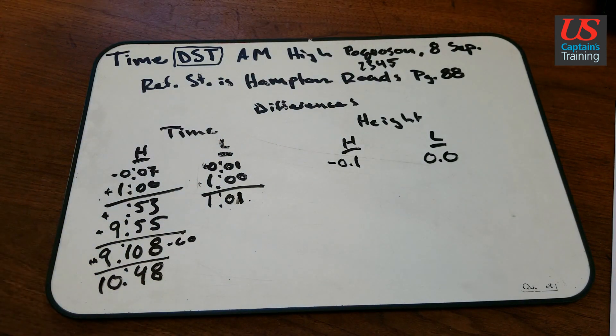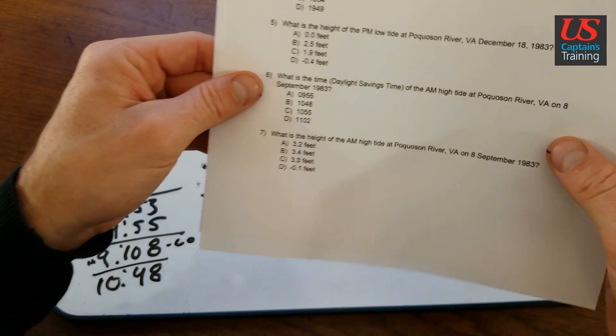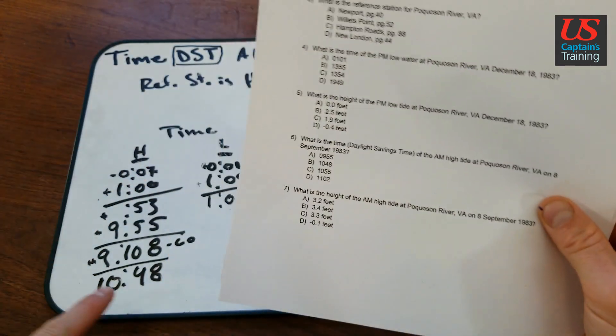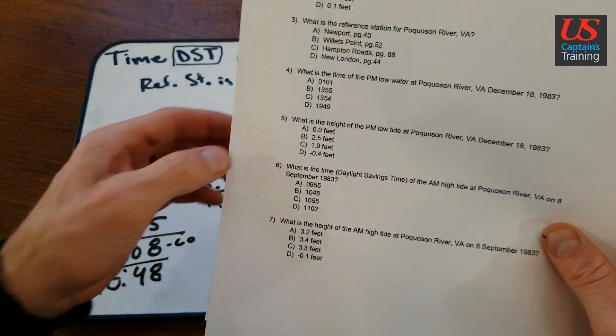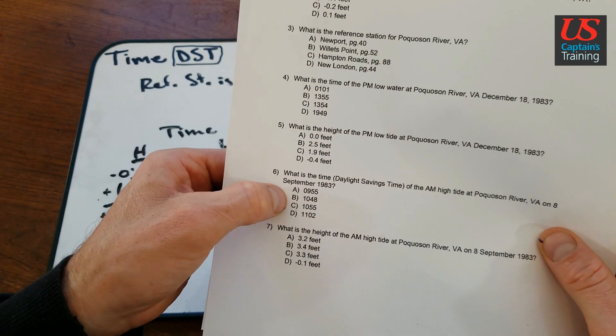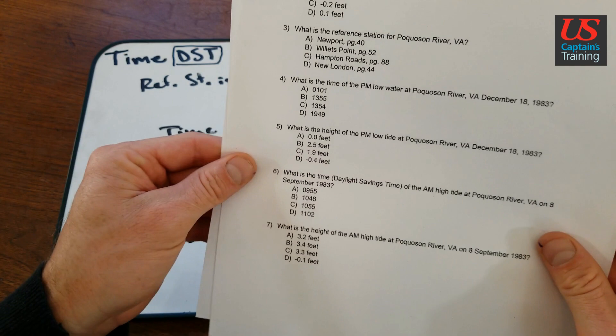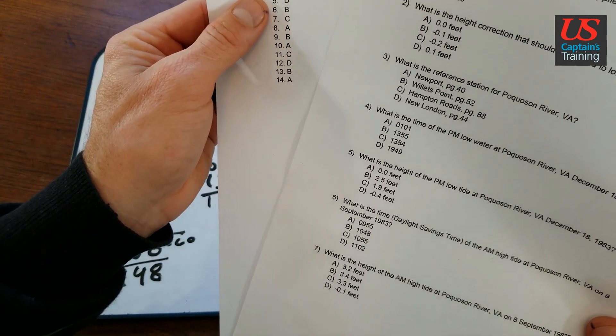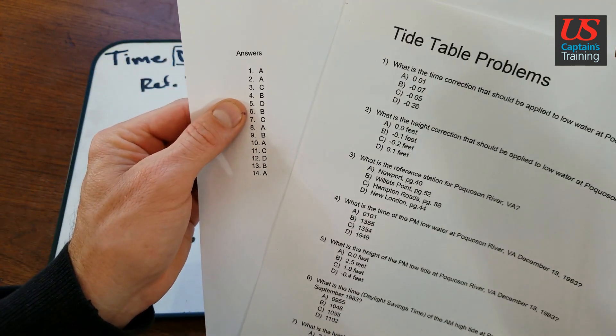Let's check our answer. For 6, 10:48. And for 6, we have 10:48 right there, B. Let's check. 6 is B.